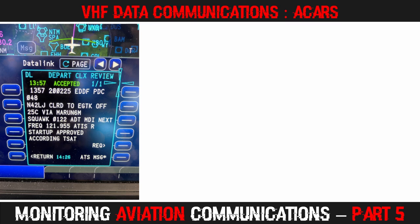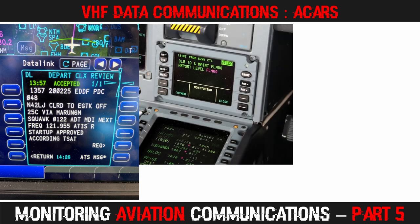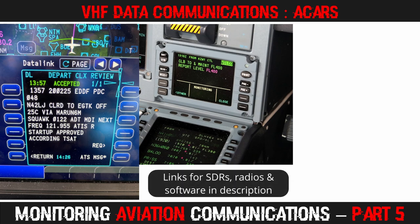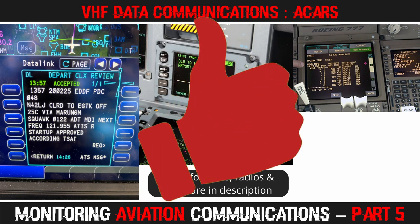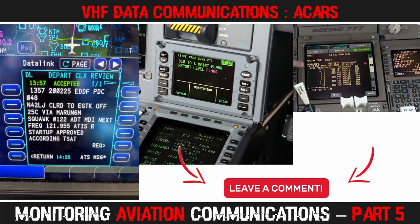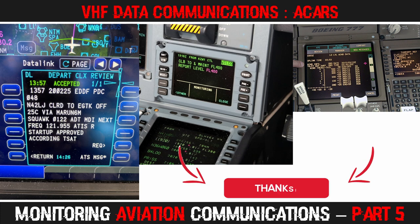Monitoring aviation communications data from ACARS requires very little investment in hardware and the messages can be well decoded with the software mentioned in this episode. In future episodes we'll look at decoding VDL2 messages as well as ACARS satellite messages, which are also fairly easy to receive. Links from today's episode can be found in the description below. If you've enjoyed the content of this video and would like to subscribe, it would be great to have you join the channel. You can let me know your thoughts in the comments below — I read every comment and respond to most within a few hours. Until next time, stay safe out there. This is Frugal Radio, out.